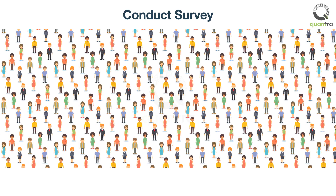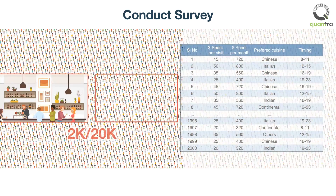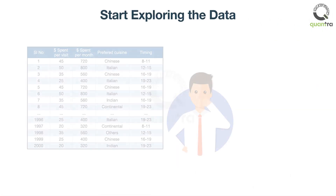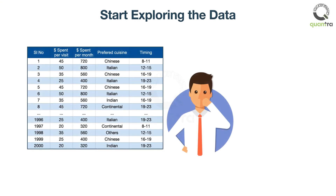Due to resource constraints, you collect responses for 2,000 out of 20,000 estimated people who visit the restaurant, and remediate all the data quality issues. Next, you start exploring the data to understand what you can do with it.